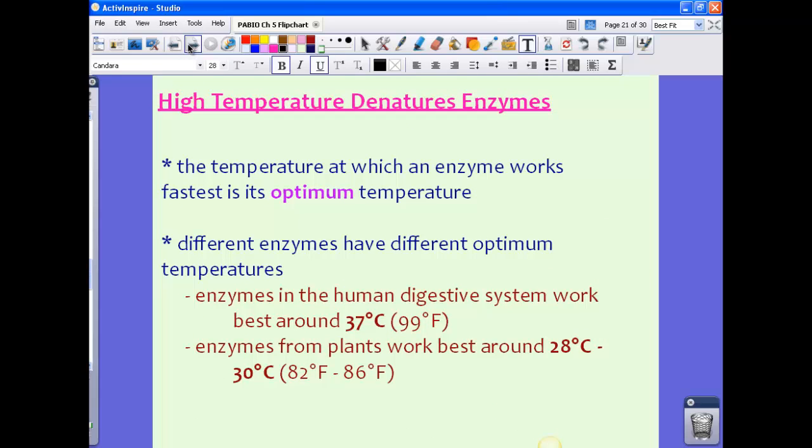Now the temperature at which an enzyme works fastest is its optimum temperature. This is the perfect temperature that it's going to work its best. Now different enzymes have different optimum temperatures. So it really depends upon what enzyme we're talking about here. Now for example, enzymes in the human digestive system will work best at about 37 degrees Celsius, which is about 99 degrees Fahrenheit. Which if you think about it, that's kind of like your internal body temperature.